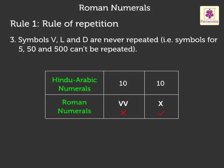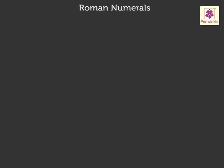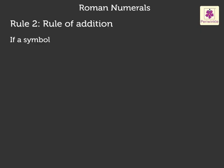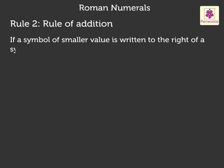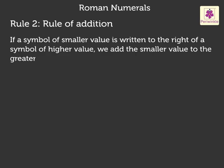Now let us look at the second rule. Rule 2: Rule of addition. If a symbol of smaller value is written to the right of a symbol of higher value, we add the smaller value to the greater value. Let us consider XI. X has a value of 10, I has a value of 1. So the Hindu-Arabic number for this Roman numeral is 11.